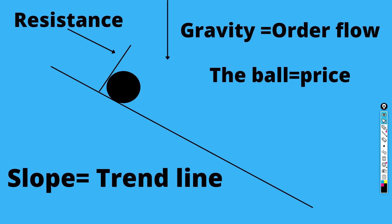Okay guys, let's begin. First I want to explain the concept — remember this is a very simple concept, so do not get confused. I'll show you in the real chart how these things look, but before that let me explain so that you can apply your common sense. See this figure — this line is a slope, and there is a ball here.